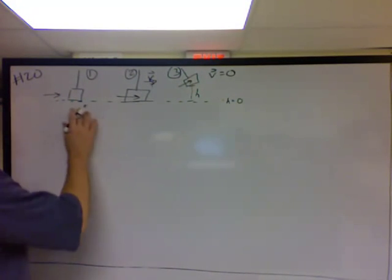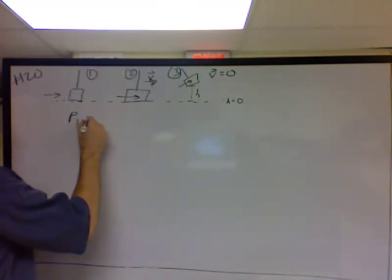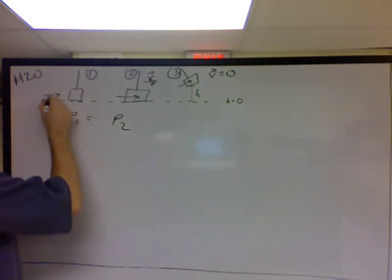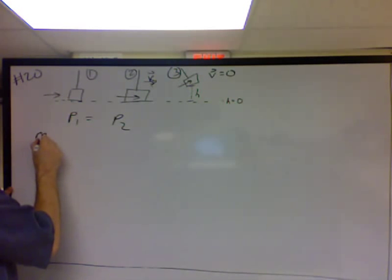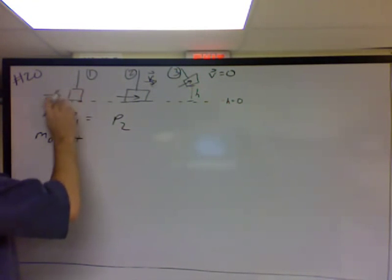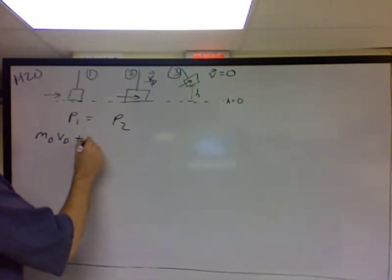Alright, so let's start by doing a momentum problem. Momentum at one equals momentum at two. And then I've got the dart's momentum. So mass of the dart, velocity of the dart, plus the momentum of the target. The target's not moving. So that would be plus zero.